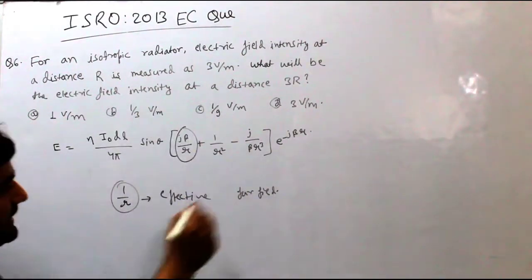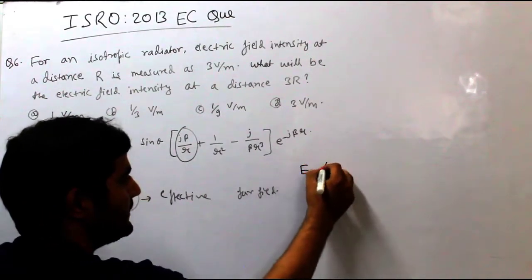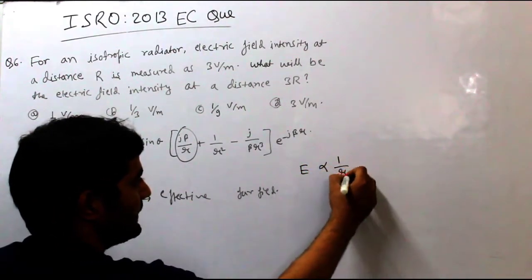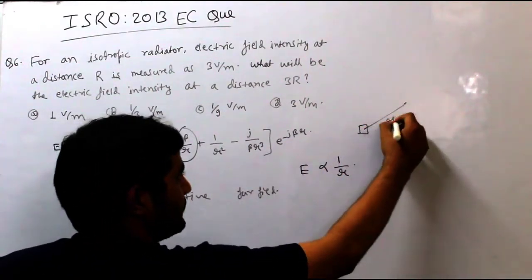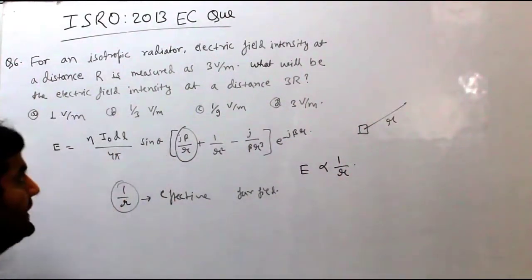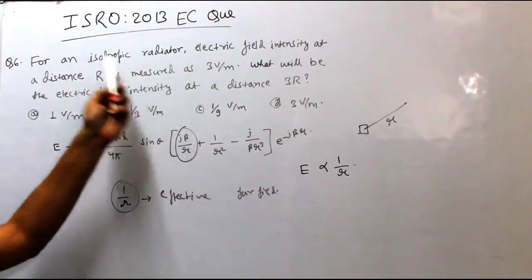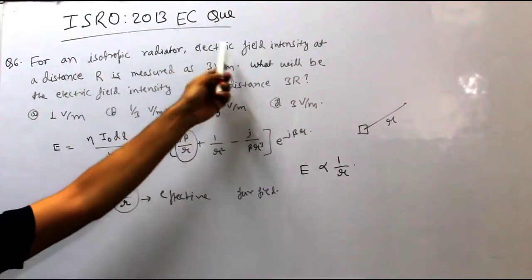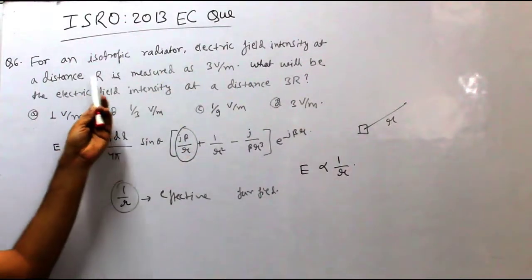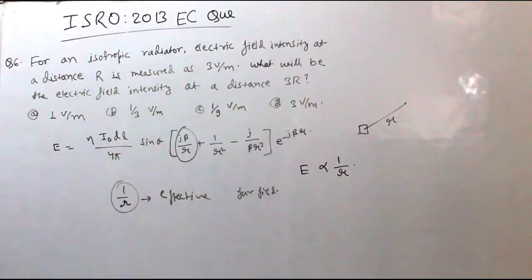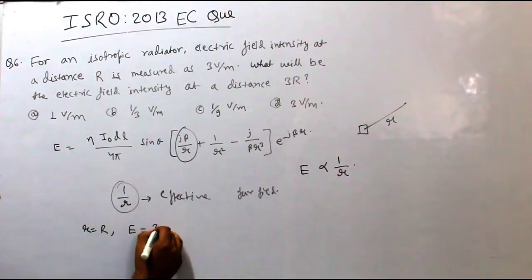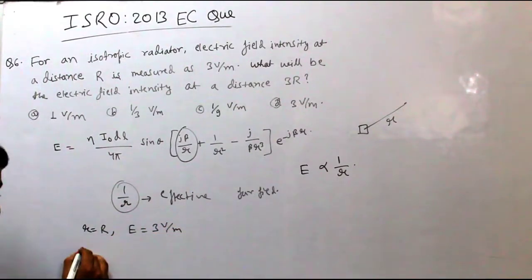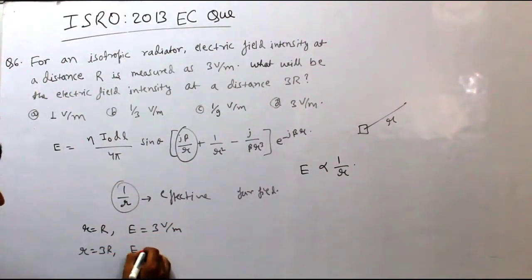So, this is clear here, which means that the electric field value will be proportional to 1 by R. That means, the distance is the distance between the antenna, which is the reciprocal of that distance. So, in this case, we have given that for an isotropic radiator, electric field intensity at a distance R is measured as 3 volt per meter. That means, when R equals to R, then electric field is given as 3 volt per meter. We have to find out that R equals to 3R for the electric field.